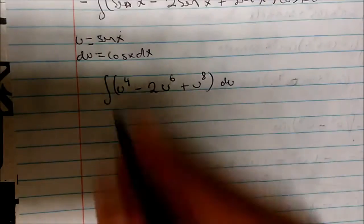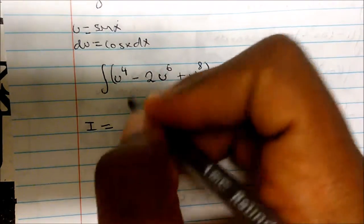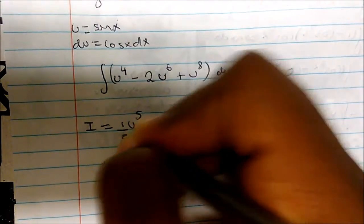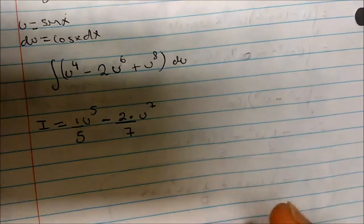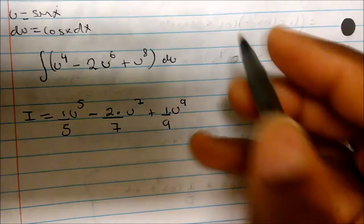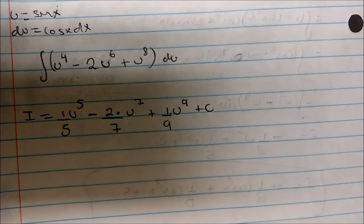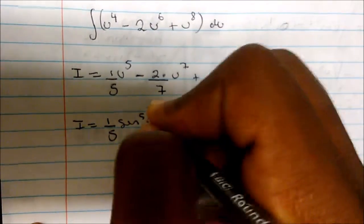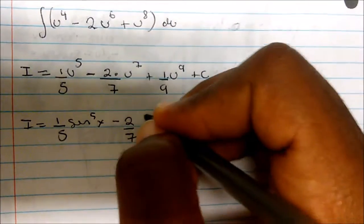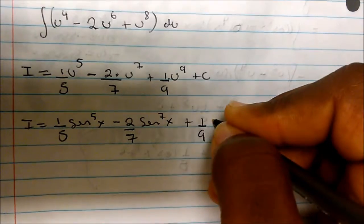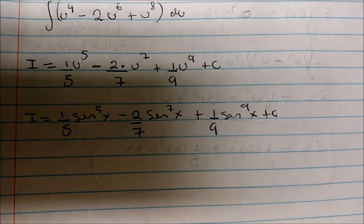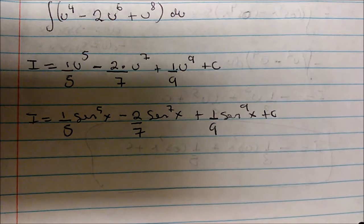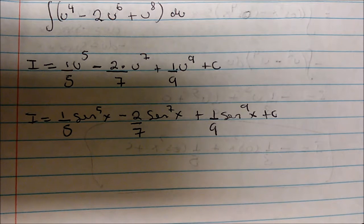So my integral is given by one-fifth u to the fifth minus two over seven times u to the seventh plus one-ninth u to the ninth, plus C. Substituting u equals sine of x back in, this becomes one-fifth sine to the fifth of x minus two over seven times sine to the seventh of x plus one-ninth sine to the ninth of x, plus C. The key takeaway from this video: once you see sine and cosine with odd and even powers, you borrow from the odd power and then use your identity.